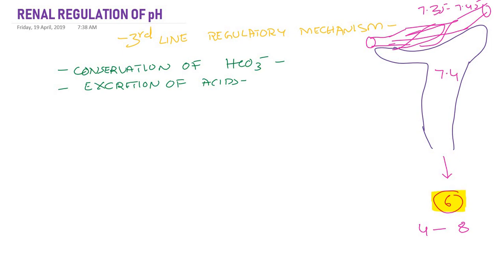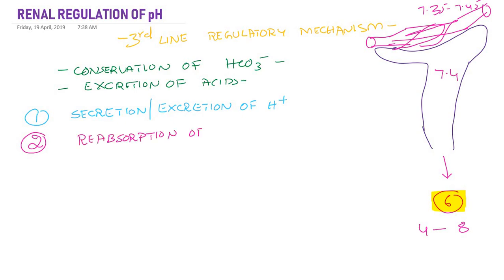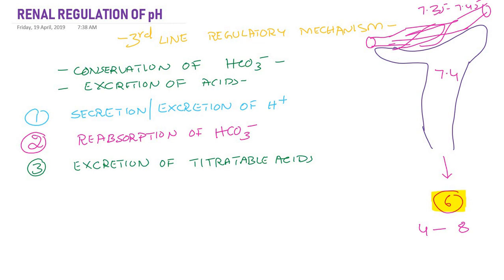The first mechanism is excretion or secretion of hydrogen ion, mainly by the proximal convoluted tubule — secretion of hydrogen ion to the tubular lumen by the tubular epithelial cell. The second mechanism is reabsorption of bicarbonate, also called recovery or reclamation of bicarbonate. The third mechanism is excretion of titratable acids, mainly in the form of phosphoric acid. And the last mechanism is excretion of ammonium. These are the four main mechanisms by which the kidney regulates the normal pH between 7.35 to 7.45.